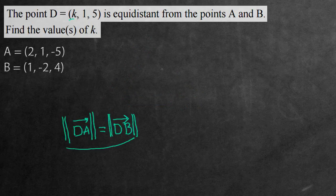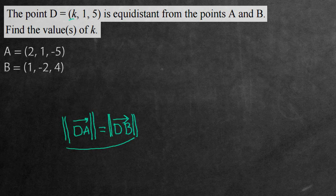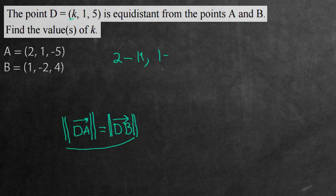But the first thing we need to find here is the actual directed line segment from D to A. To do this, we have to take the vector A and subtract it by the vector D. This would give us that directed line segment. So the vector A is 2 subtract the vector D, which is K, comma, 1 subtract 1, comma, negative 5 subtract 5. And this would give us the directed line segment for D to A.